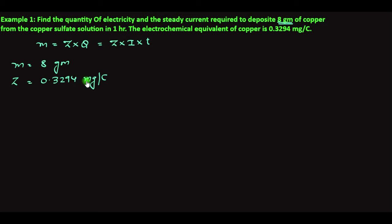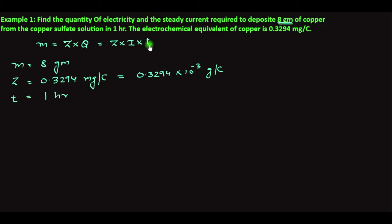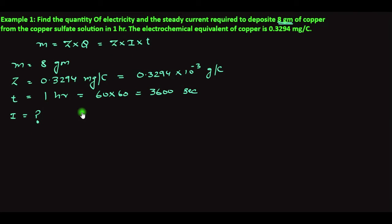The mass is in grams but Z is in milligrams, so we convert: Z = 0.3294 × 10⁻³ grams per coulomb. Time is 1 hour = 3600 seconds. We have no information about current or charge — both are required. Since we have M and Z, we use Q = M / Z.